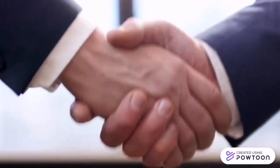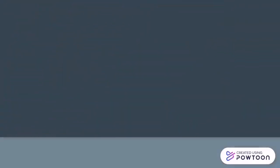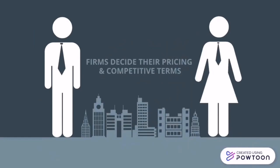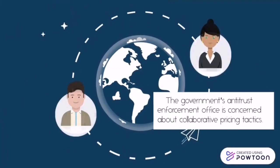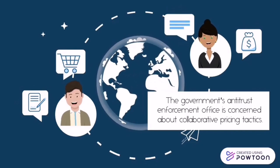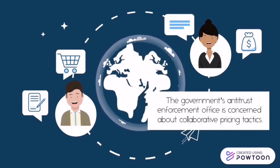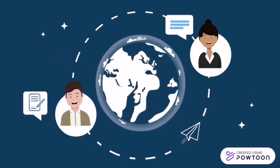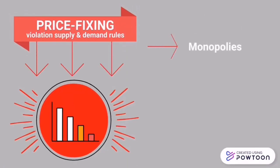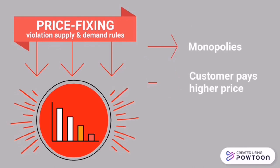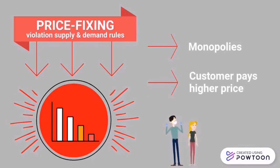According to the Federal Trade Commission, price fixing is an agreement between competitors. Firms must decide their pricing and other competitive terms rather than bargaining with a competitor. Contracts between competing firms about the prices or wages they will pay are examples of price fixing. The government's antitrust enforcement office is concerned about collaborative pricing tactics. Price fixing is a violation of typical supply and demand rules, giving monopolies a competitive edge and not serving the public's best interests. Customers pay higher prices because of these practices.